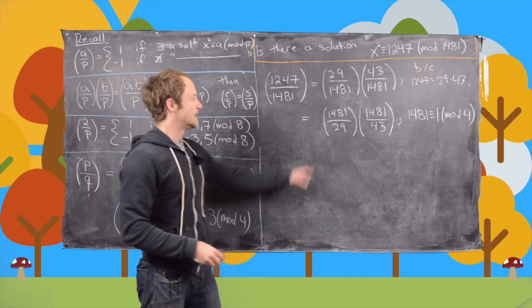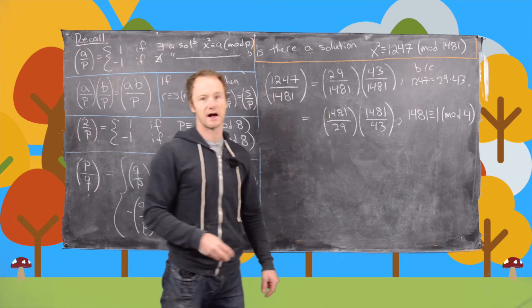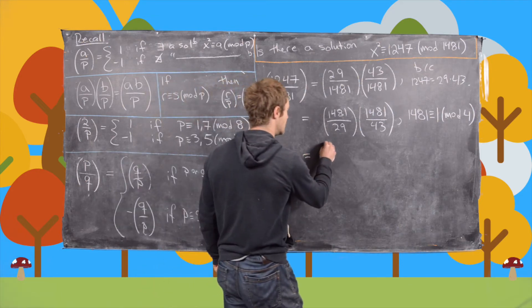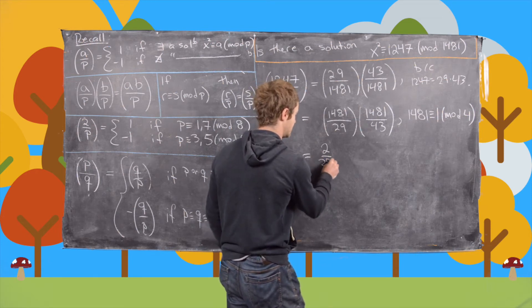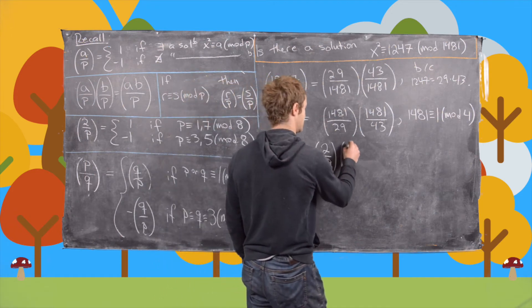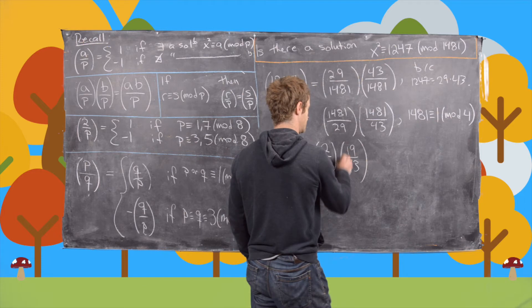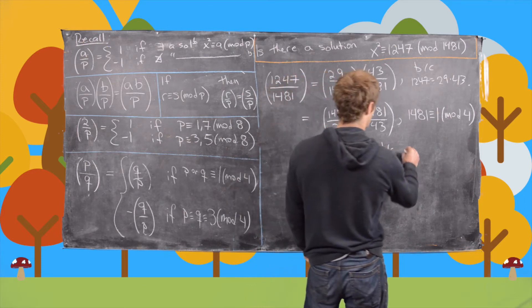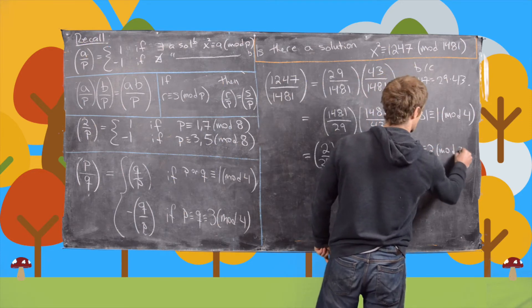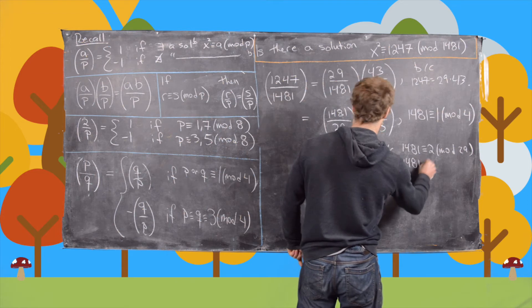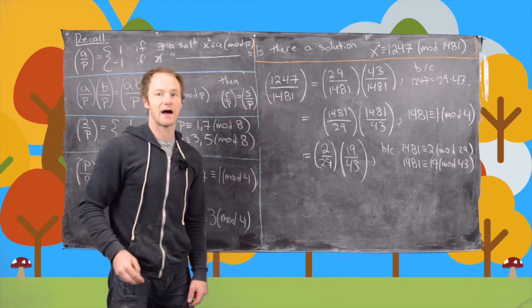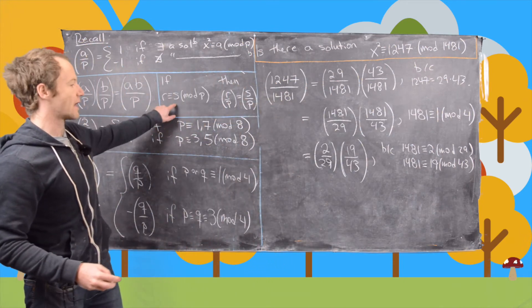So now the next thing that we'll do is we'll reduce 1481 mod 29 and 43. So let's do that. So in this case, we're going to get 2 by 29. So that's for this one. And in the next one, we'll get 19 by 43. And so that's because 1481 is congruent to 2 mod 29 and 1481 is congruent to 19 mod 43. So we did that reduction. And that was using this property right here.